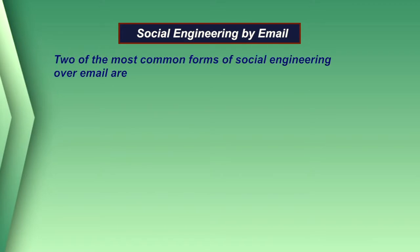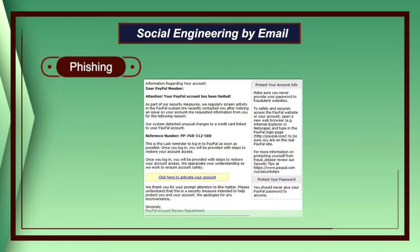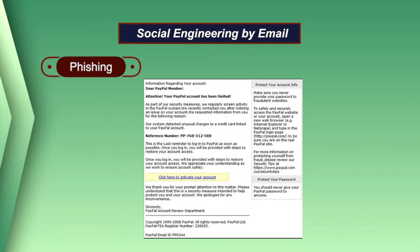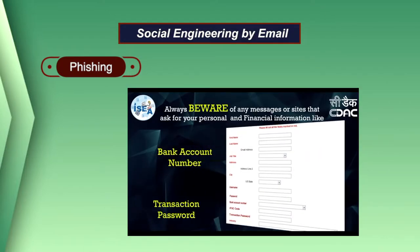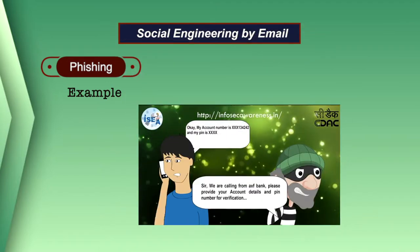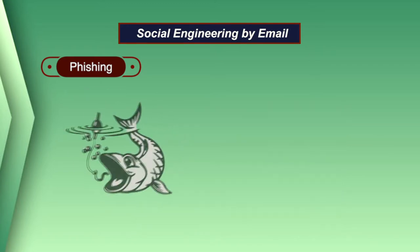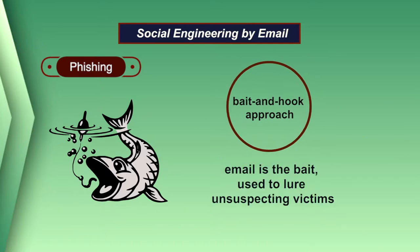Two of the most common forms of social engineering over email are phishing and 419 scams. Phishing emails typically take the form of fake notifications purporting to be from a well-known organization like a bank, payment systems, or software vendors, asking for the recipient's personal information including user credentials, credit card numbers, or banking information. Phishing attacks are essentially a bait-and-hook approach wherein the email is bait used to lure unsuspecting victims before hooking information from them.